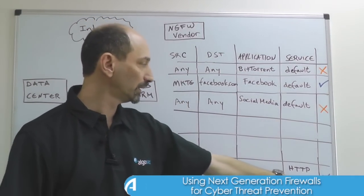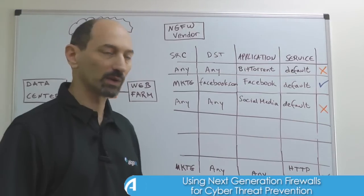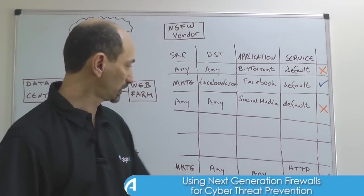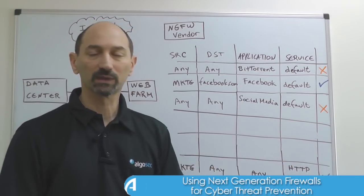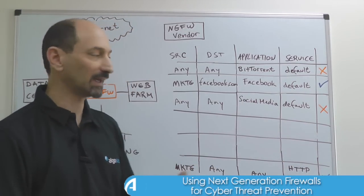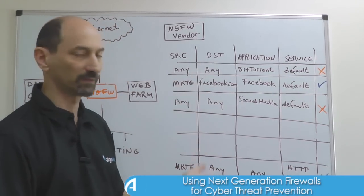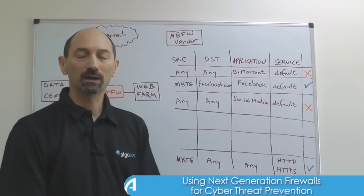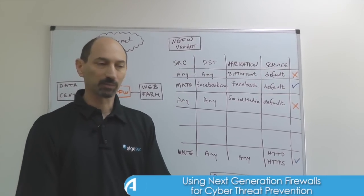And then we have a broader allowing rule for web traffic that we want to allow. So this is sort of a blacklisting approach.